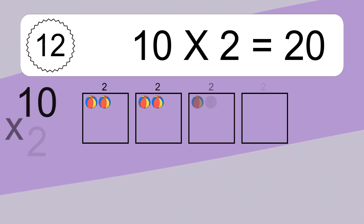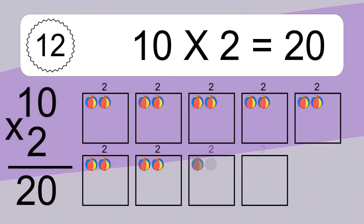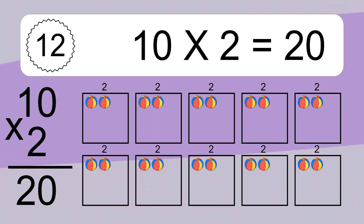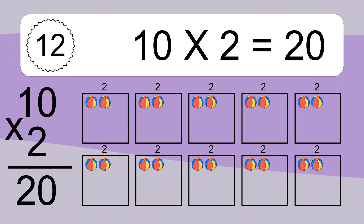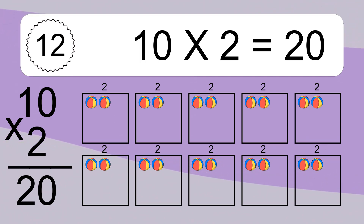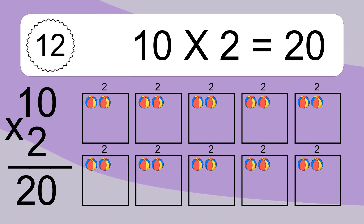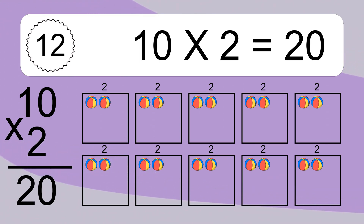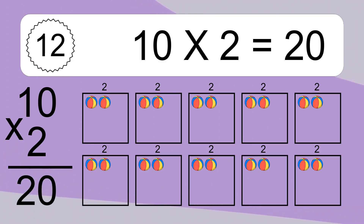10 times 2 equals what? 10 times 2 equals 20. We have 10 boxes, and each box has 2 colorful balls inside. If you count all the balls in all the boxes together, you will have 10 times 2 balls. This equals 20 balls.